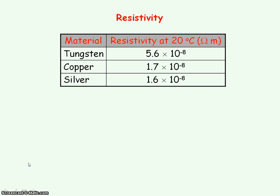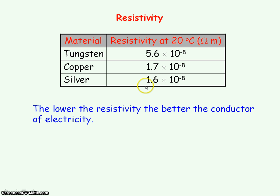To identify which material is the best conductor of electricity, we look at its resistivity value rather than its resistance value, since resistance depends on length and cross-sectional area. This table shows the resistivity values of three metals at 20°C. The lower the resistivity, the lower the resistance and the better the conductor. Silver is a better conductor than copper, but because it's more expensive, all our wiring is made from copper.